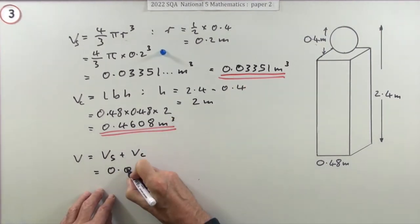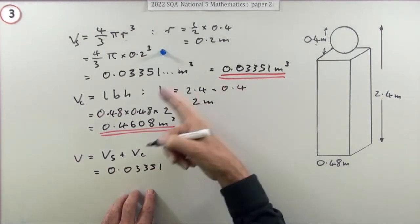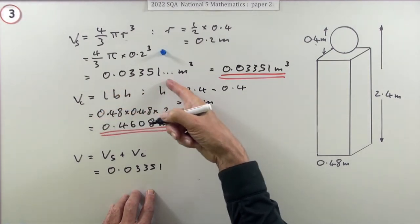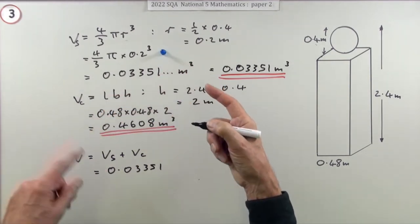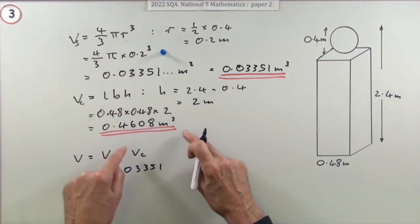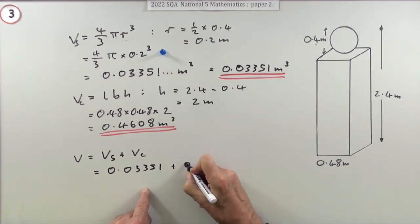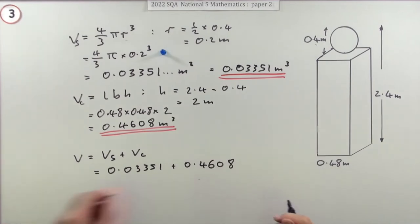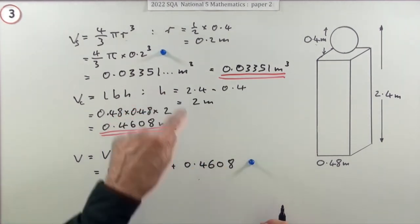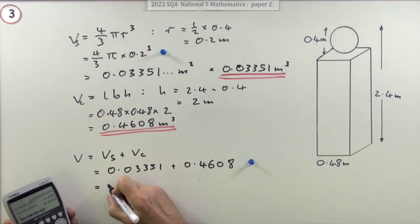So far we've got these two intermediate answers. To get the final volume, you're just going to add the two of them together. 0.3351 plus 0.4608. That's the next mark for knowing to add them together, for putting two in here and knowing to add them.